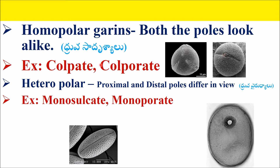Heteropolar — proximal and distal poles differ in view. A monosulcate grain has only one sulcus. It is monoporate. This is an example of a heteropolar pollen grain.